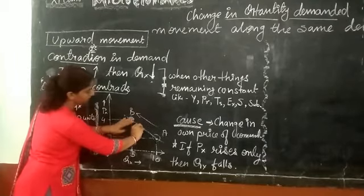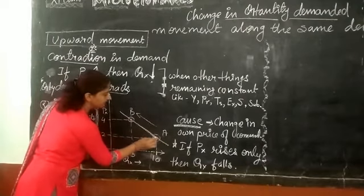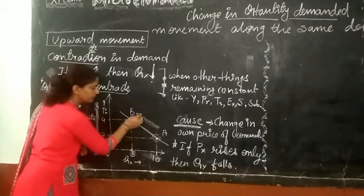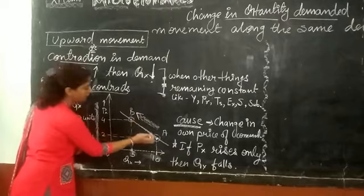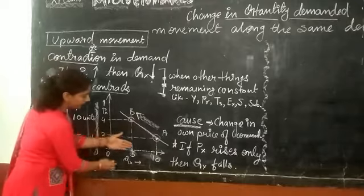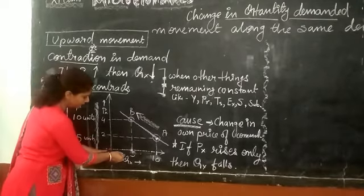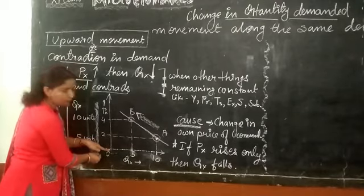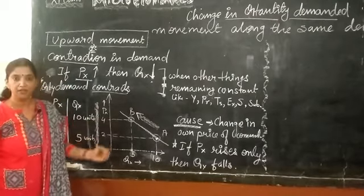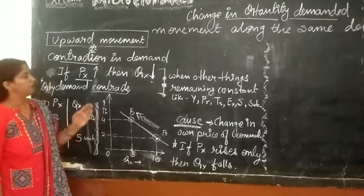By joining these points we get the demand curve, and we can easily understand that after the price rises the consumer moves from A to B. After this upward movement along the demand curve, the quantity demanded contracts from 10 to 5. Earlier the consumer demanded 10 units; now the consumer demands 5 units. So we can say there is contraction in the demand for a particular commodity by a consumer.